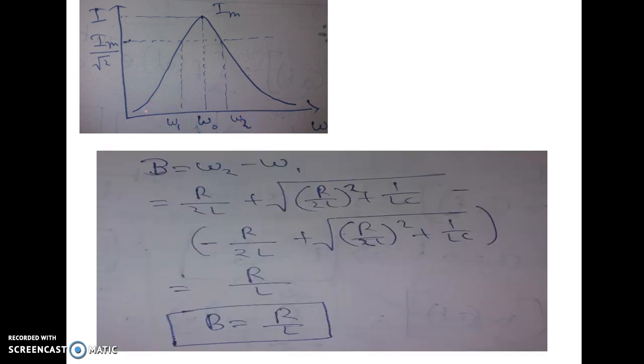Now, this omega 2 minus omega 1 is called bandwidth of the resonating circuit. So basically the bandwidth is this one, omega 2 minus omega 1. We can calculate the mathematical expression of bandwidth from the mathematical expression of omega 2 and omega 1.